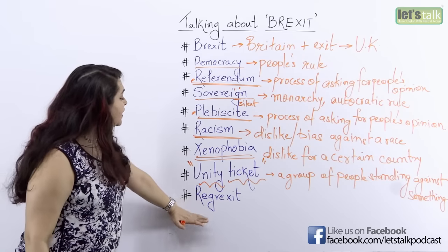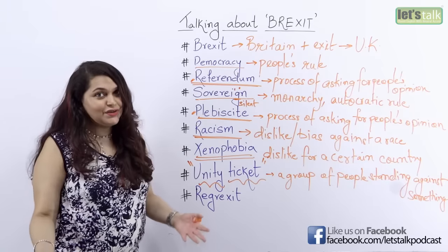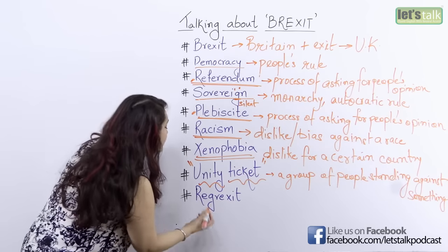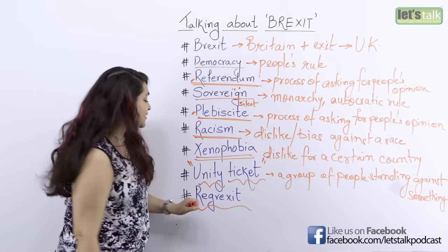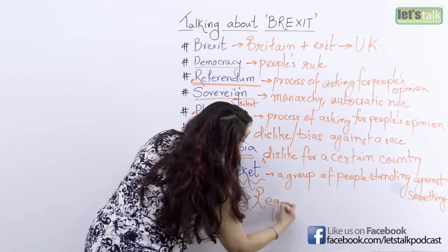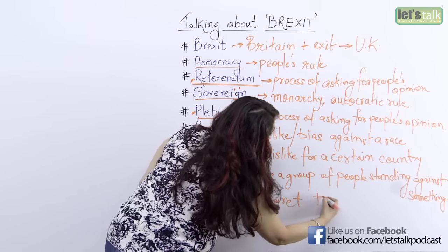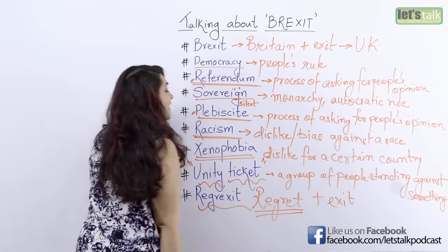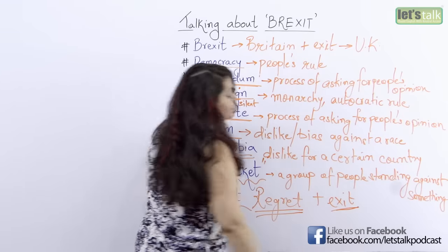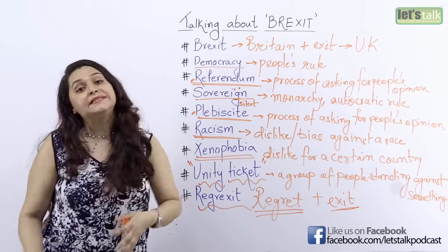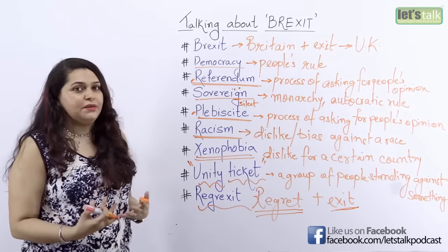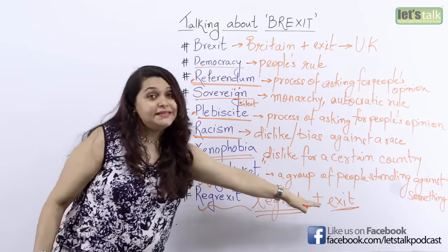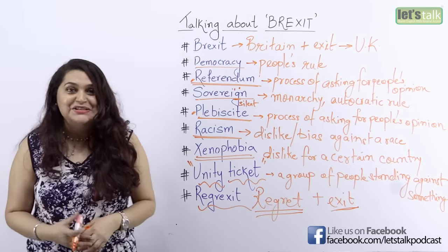Moving on to the last word — now this word is not actually part of the dictionary; it's a slang word that has come into being because of the Brexit issue: Regrexit. It's a combination of two words — regret plus exit. Regret is feeling bad about something, and exit is moving out. There are a lot of people, especially in the big cities in the UK, who are not happy about the fact that Britain has walked out of the European Union. They are regretting the exit, which is why the word Regrexit comes into play.